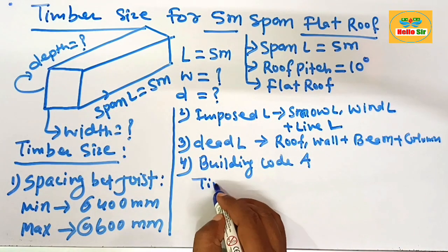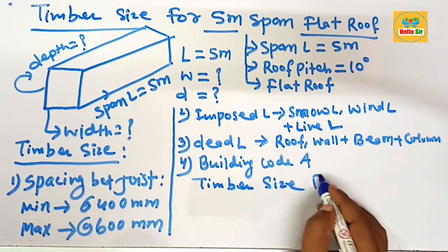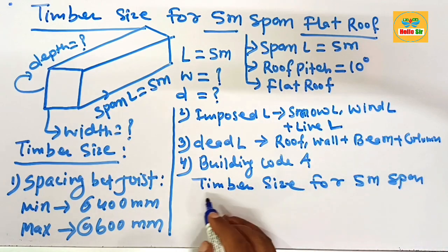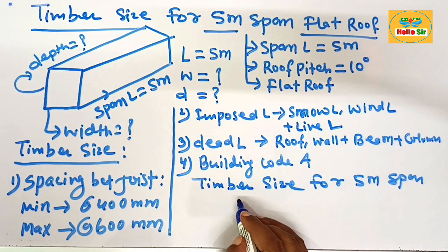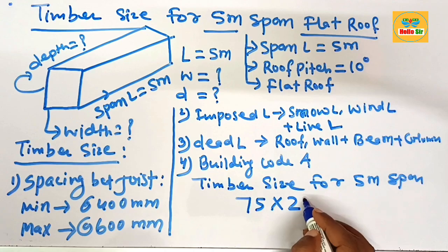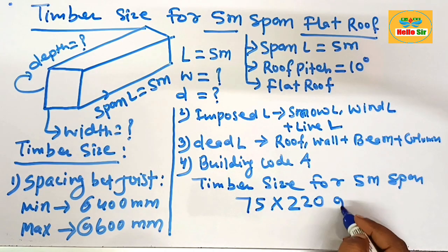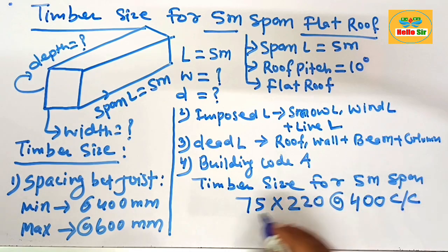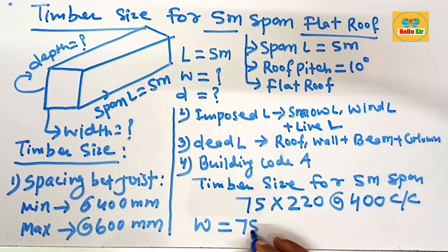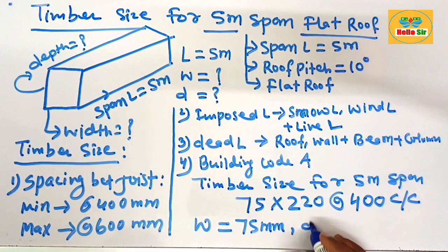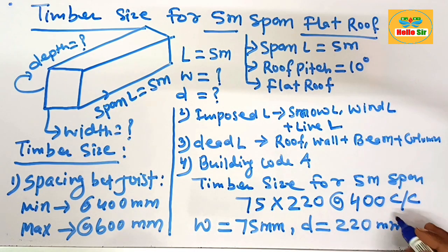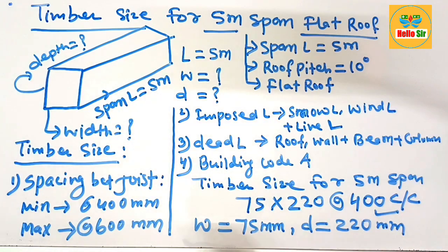For a 5-meter span flat roof, the timber size will be 75 mm × 220 mm at 400 mm center-to-center spacing. The width of the joist is 75 mm, the depth section is 220 mm, and the center-to-center spacing is 400 mm.